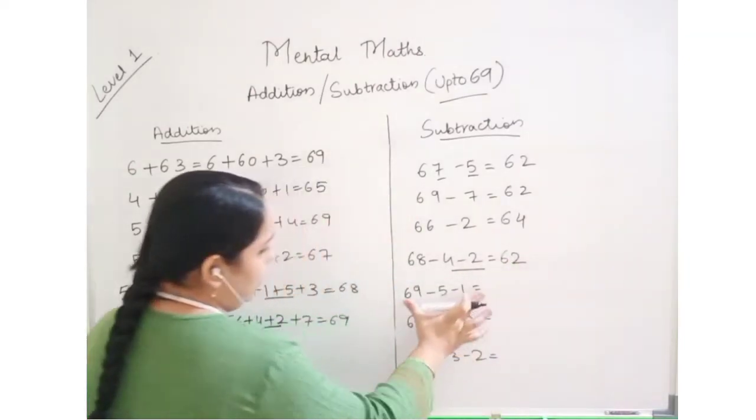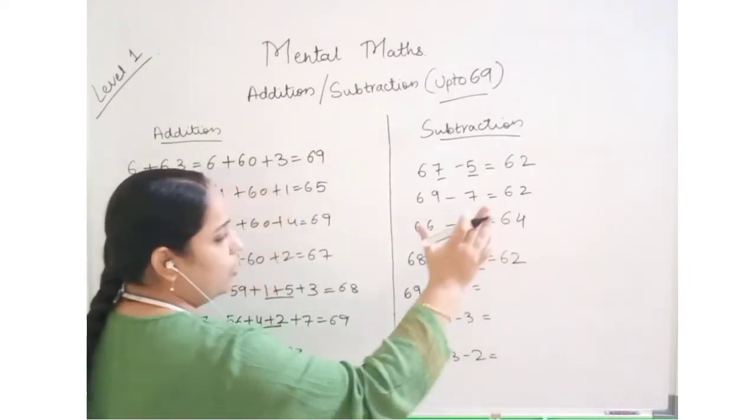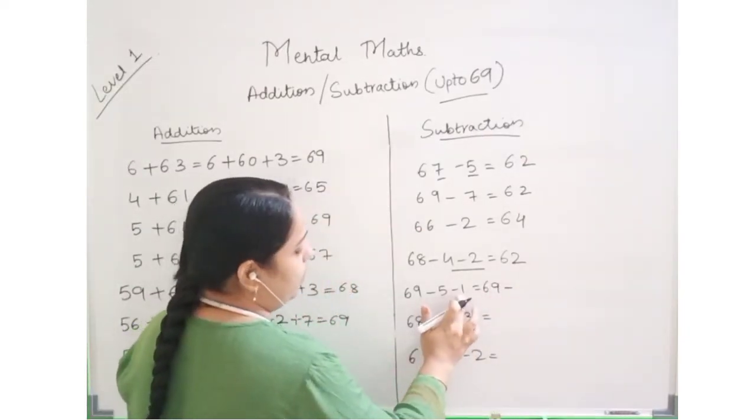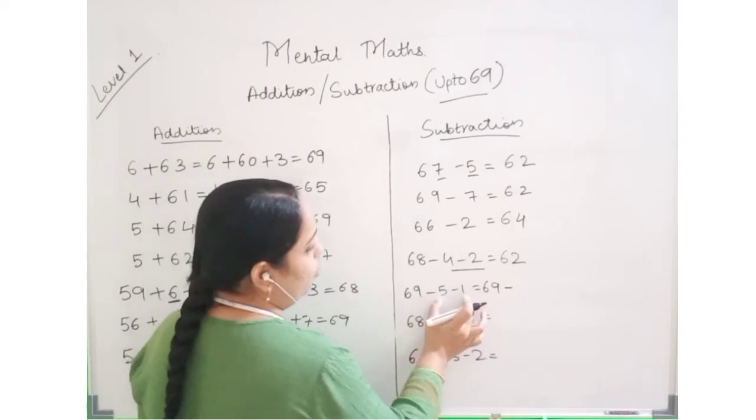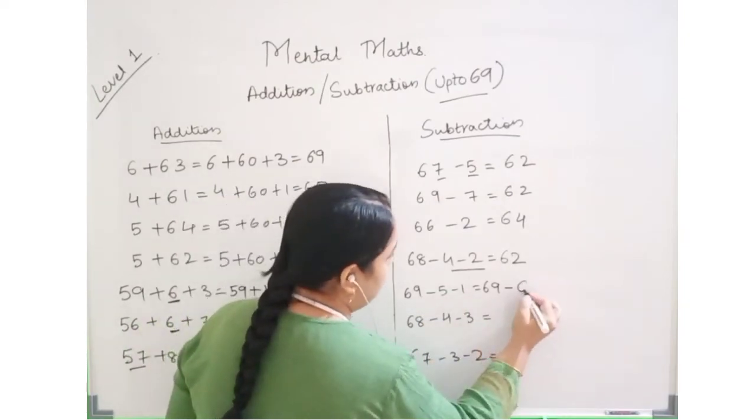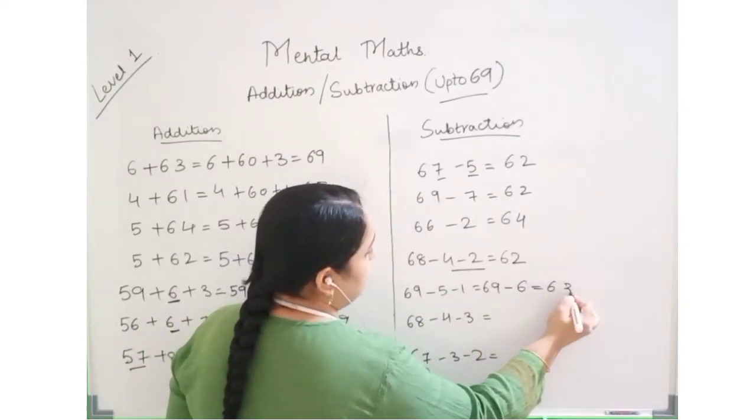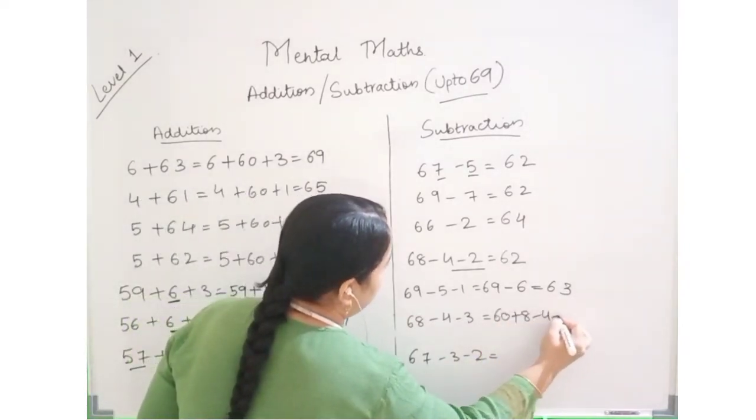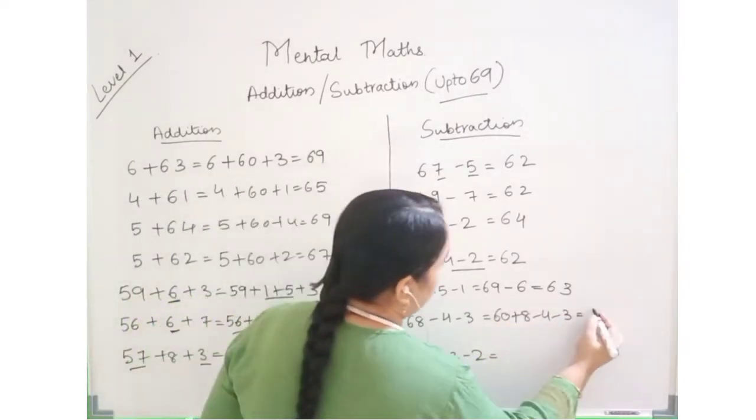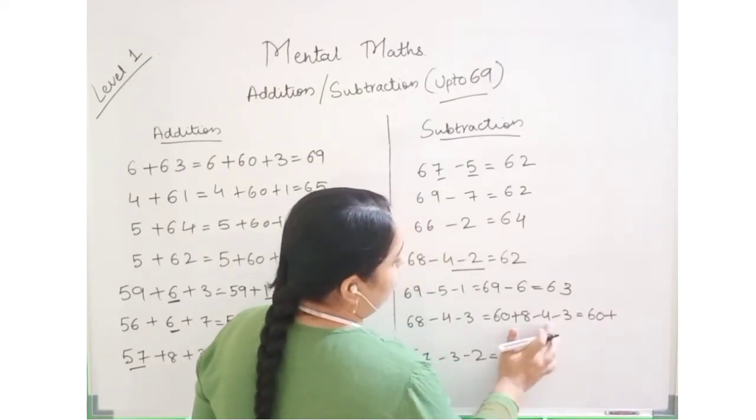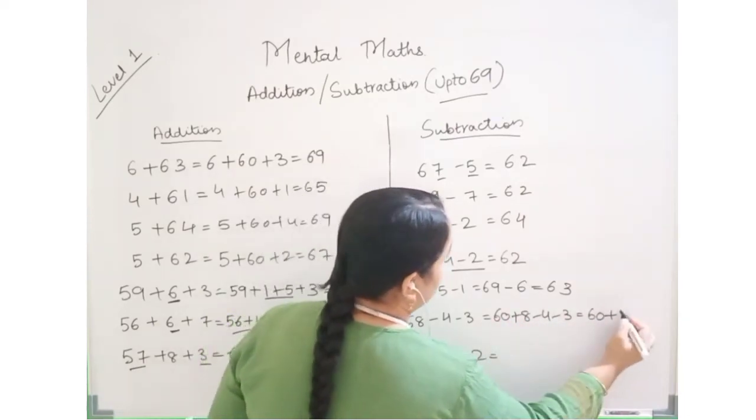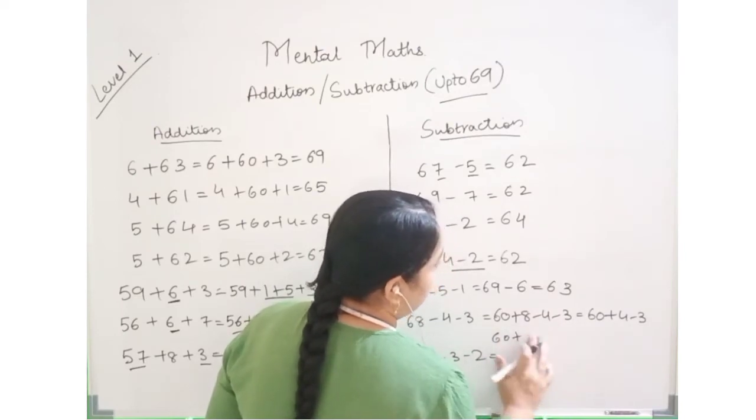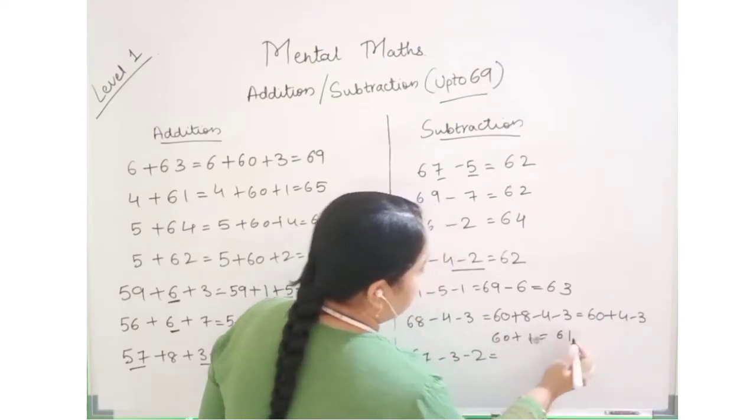Now we have all the sums with expansion for revision. 69 minus 5: 5 minus 1, if we do this, the answer will be 64. 63, we will expand: 60 plus 8 minus 4 minus 3, then 60 plus 4, the answer is 61.